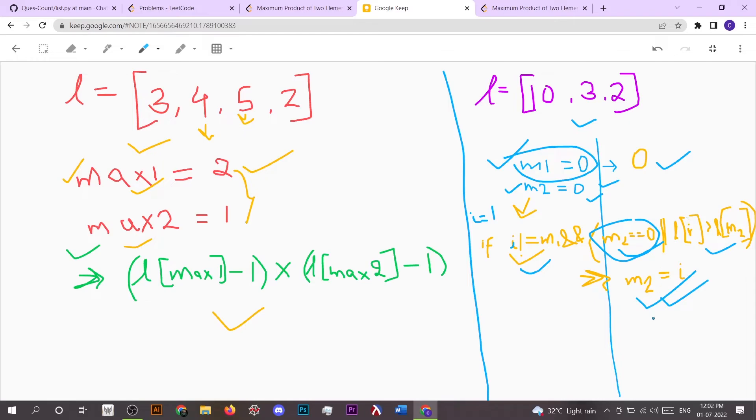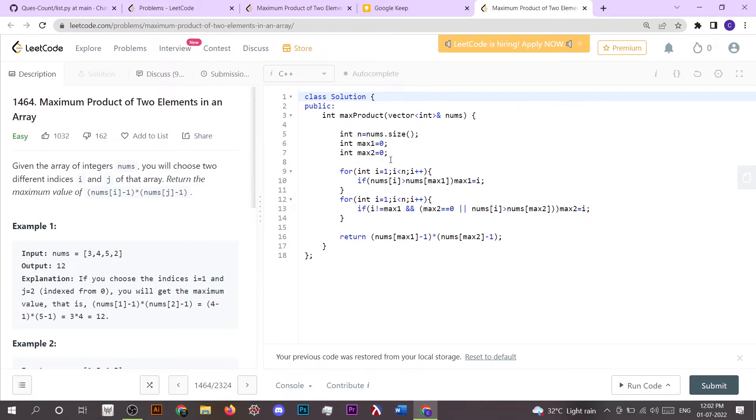Let's dive into the coding part. Here what I've done is I've taken two integers max1 and max2. Max1 stores the index of the maximum value, the most maximum value, and then max2 stores the index of the second maximum value.